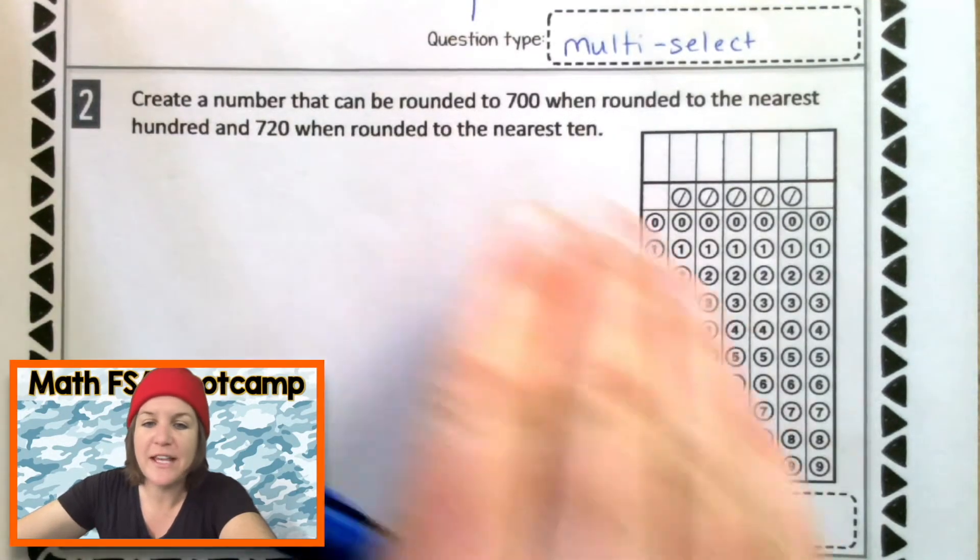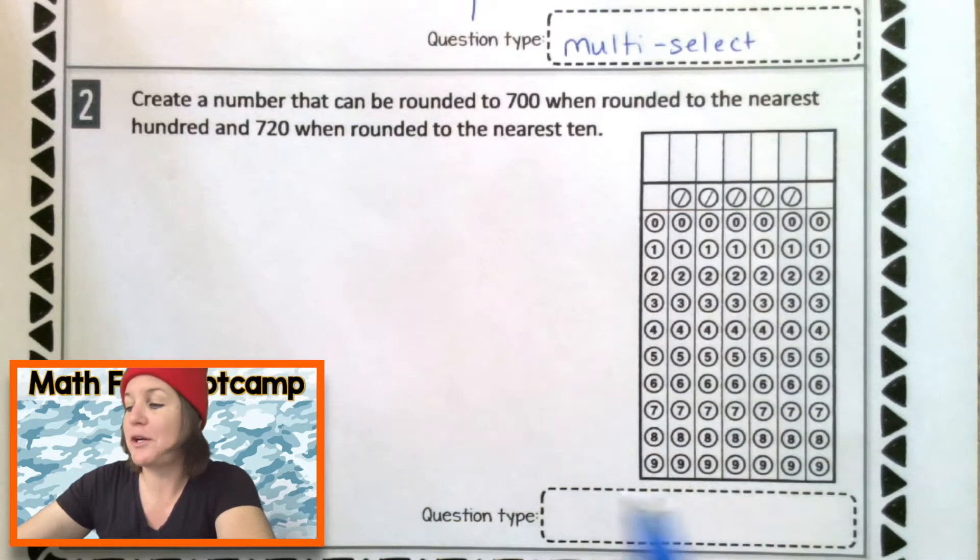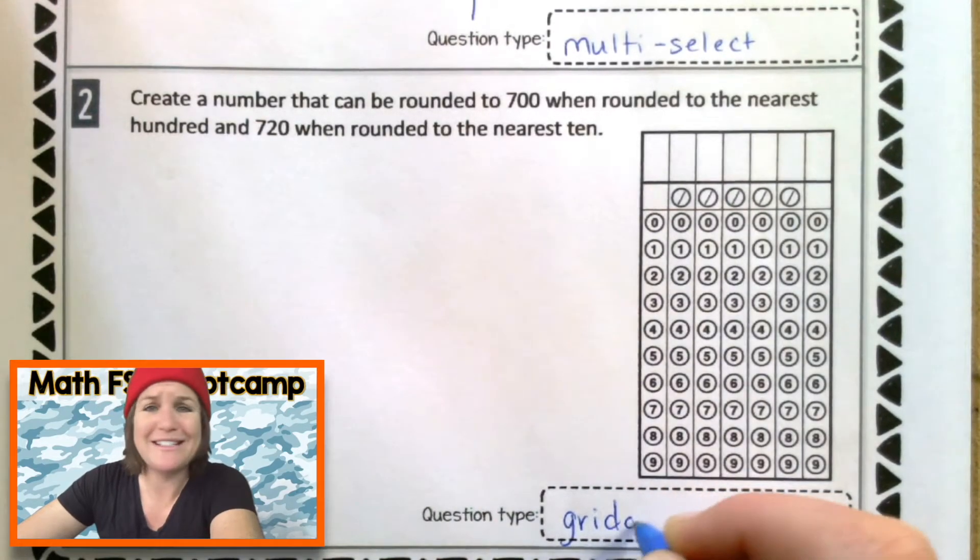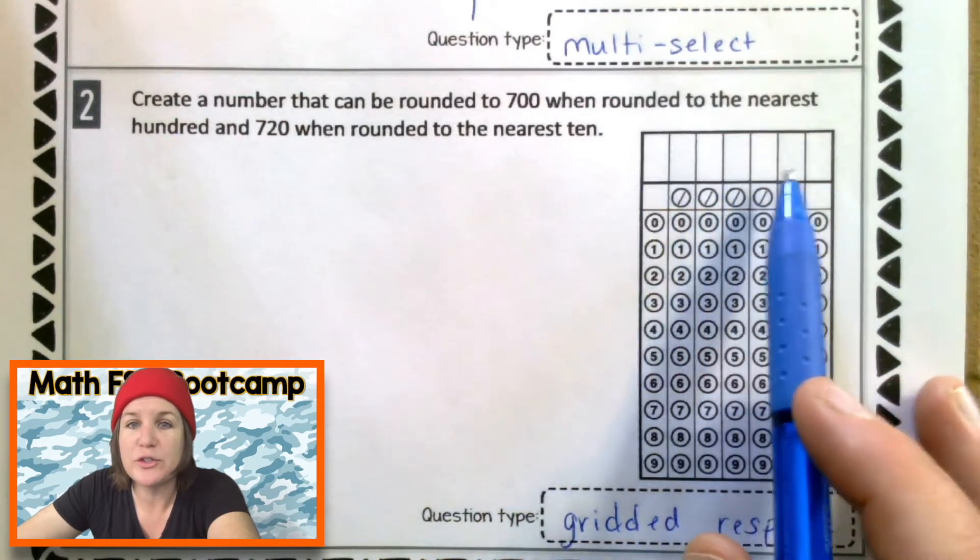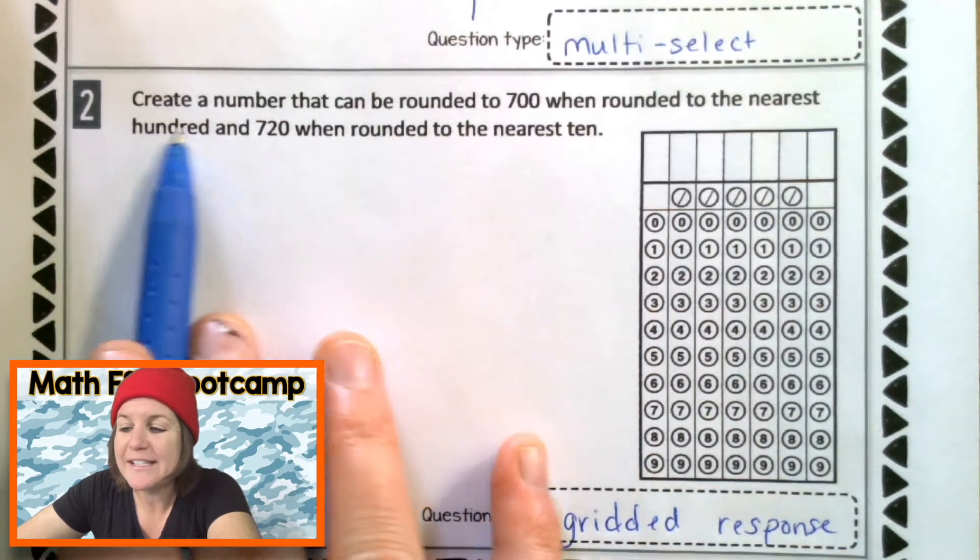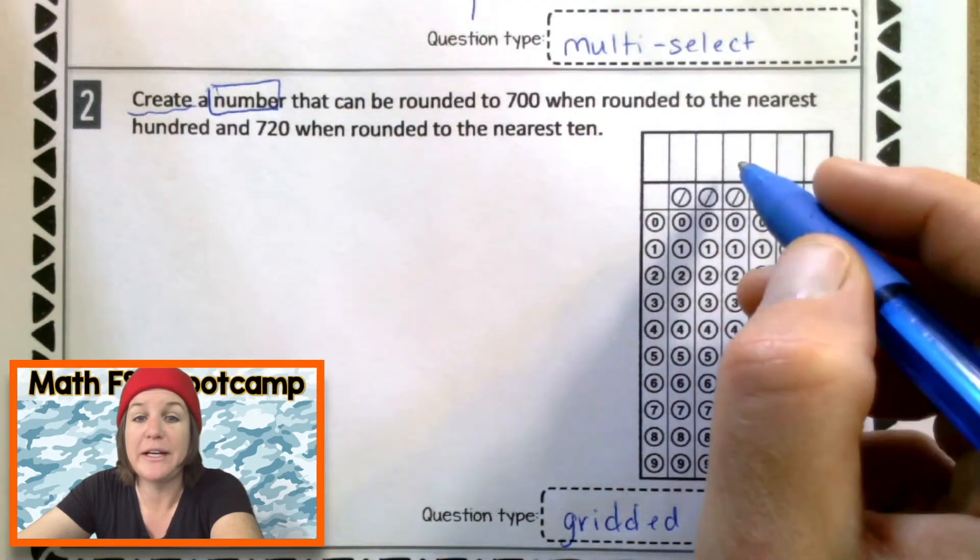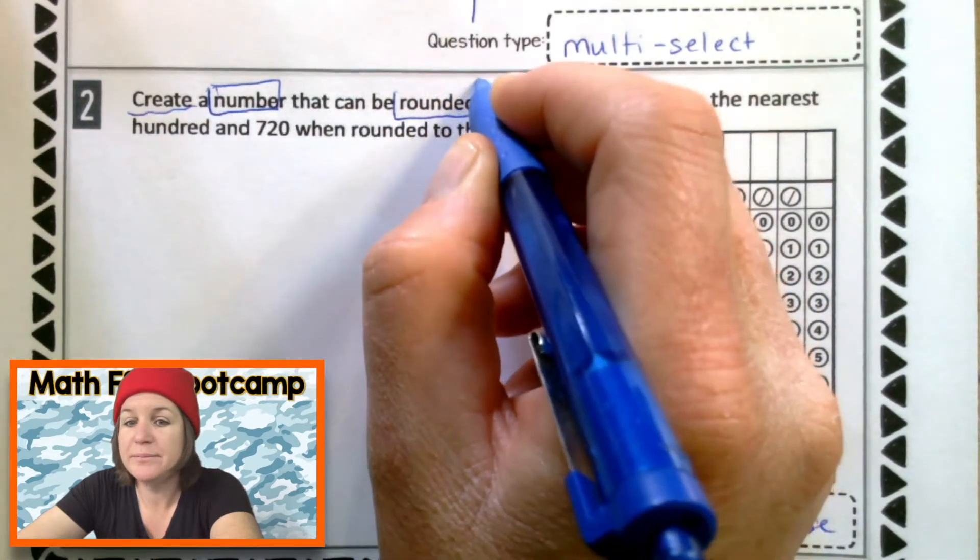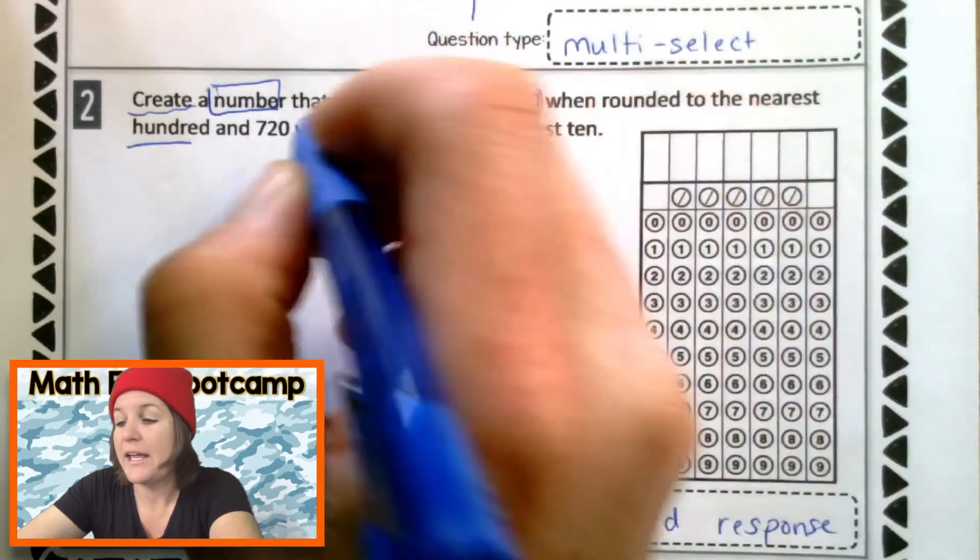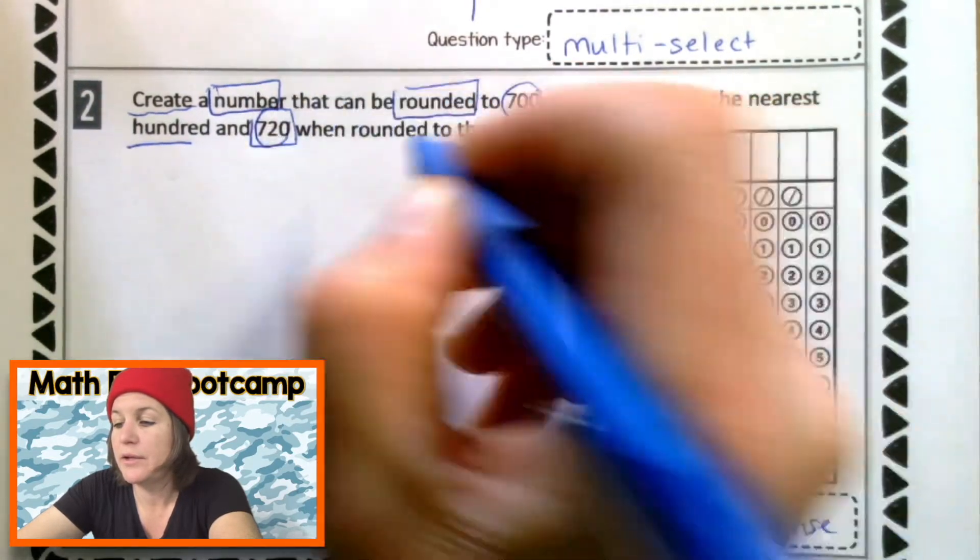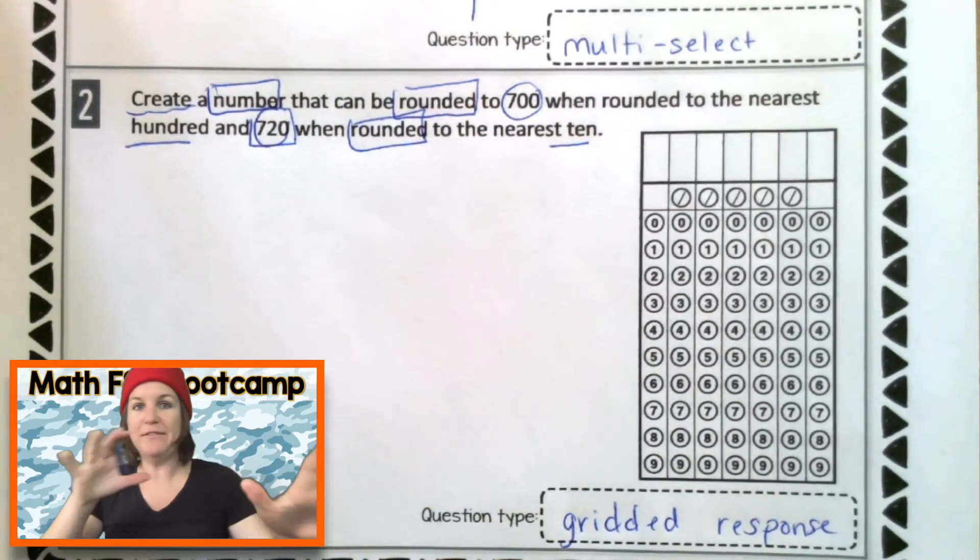Welcome to number two. Let's go ahead and scan the question and decide what question type this is. I see a grid. That must mean this is a gridded response. Jot it down if you did not already. Gridded response. That means that my answer is going to go into the grid. But let's go ahead and read the question first. It says, create a number. So, we are going to have to create a number. That can be rounded to 700 when rounded to the nearest hundred. And 720 when rounded to the nearest ten. That's a lot of thinking. A lot going on in one problem. We are kind of doing two different things here.